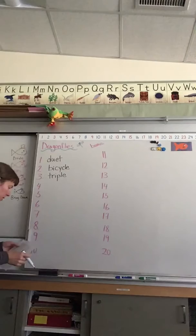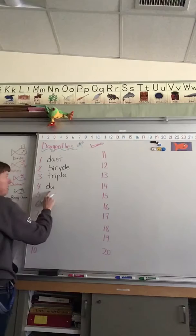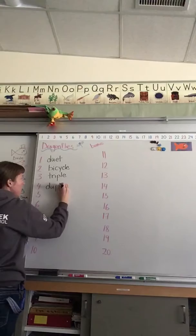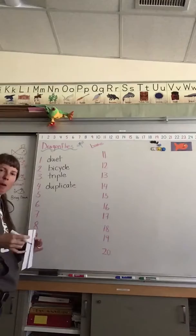Number four, duplicate. It's got the same 'du' as duet. It means there's going to be two of them. So you are going to duplicate these spelling words. You're going to make another copy of them somewhere else.